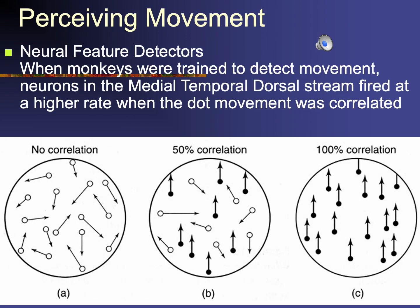Here's a slide referring to a study in which monkeys were trained to detect movement. When movements were correlated — when they had a pattern of dots in which movements were the same — there were higher firing rates in the medial temporal dorsal stream than when the dots were not correlated. If they were partially or not correlated at all, there wasn't a firing rate anywhere near as high. This refers to the dorsal stream in the occipital-parietal area, the part of the brain that detects where things are. When objects were moving in a correlated fashion, you get a different response in the neuron, and the brain is formulating a model of an object moving in three-dimensional space.